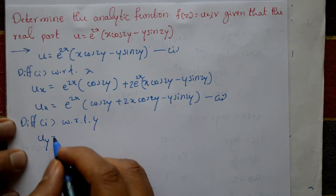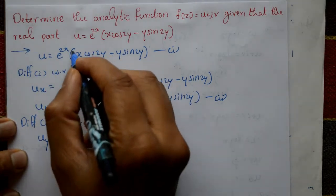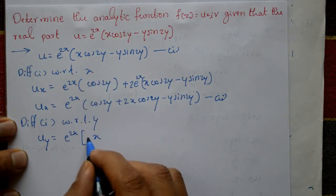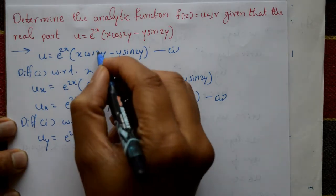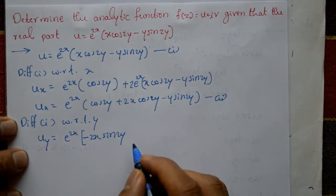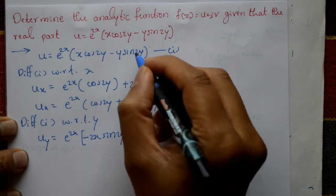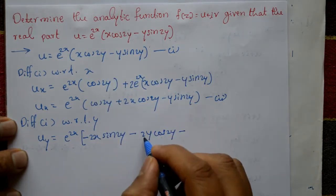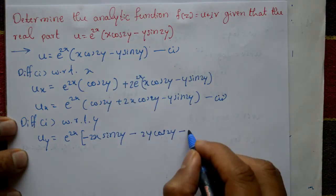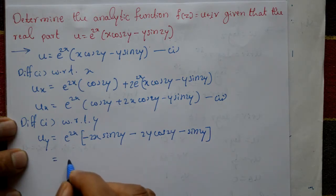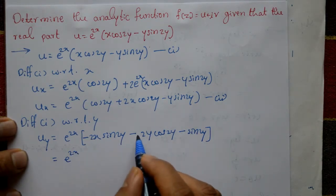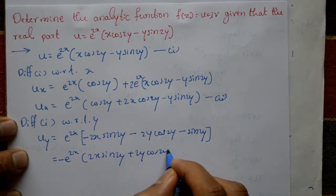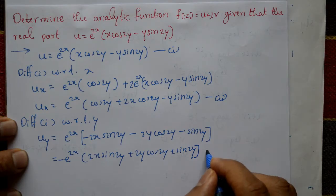For ∂u/∂y: e^(2x) is as is, x is constant. Differentiate cos2y to get -sin2y · 2. For y·sin2y, apply the product rule: differentiate y to get 1, leaving sin2y, plus y·cos2y·2. Taking minus outside: ∂u/∂y = -e^(2x) * (2x·sin2y + 2y·cos2y + sin2y). This is equation number 3.